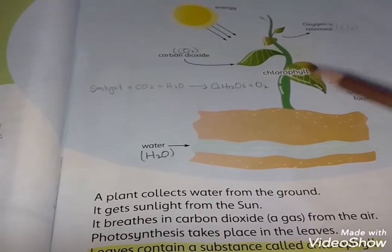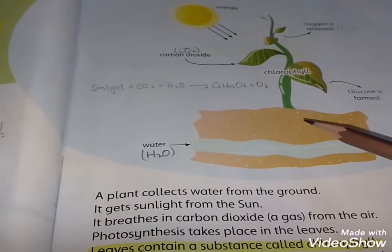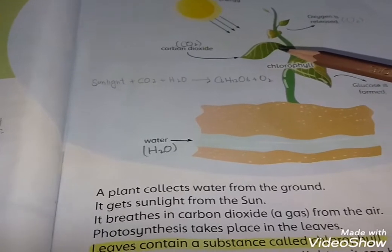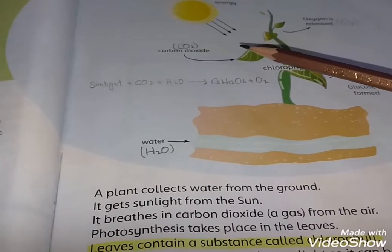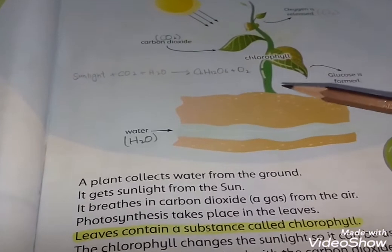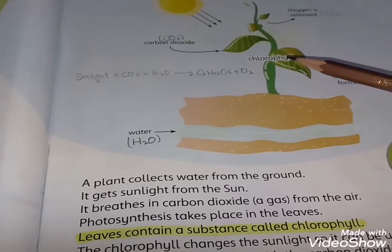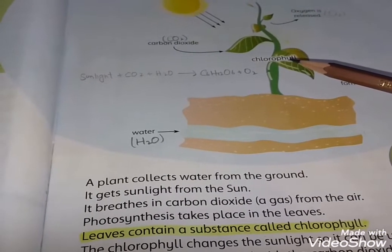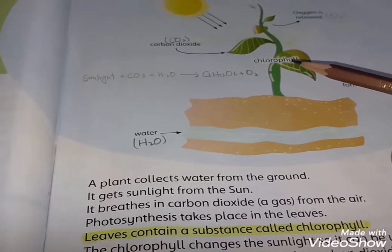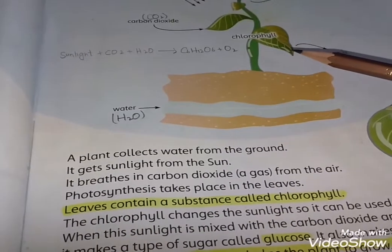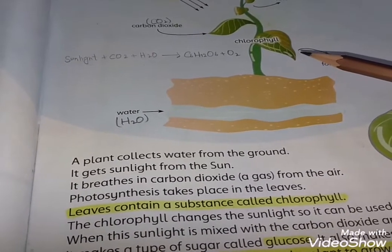The plant gets sunlight from the Sun and breathes in carbon dioxide from the air. Photosynthesis takes place in the leaves. Leaves contain a green-colored substance called chlorophyll. The chlorophyll changes the sunlight so it can be used by the plant.